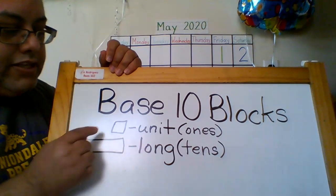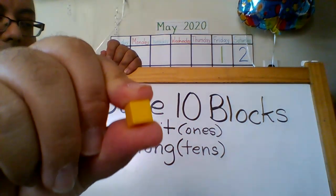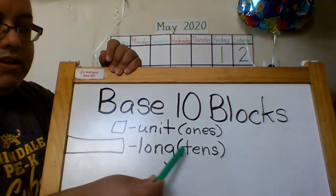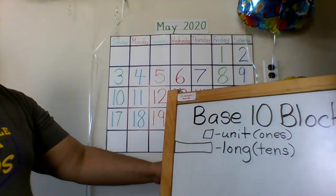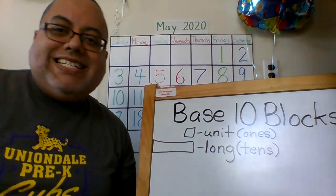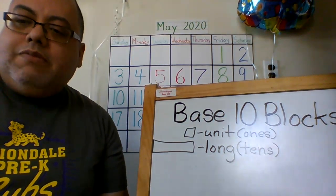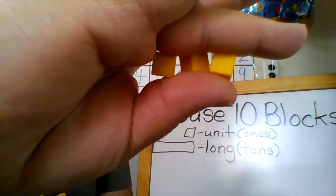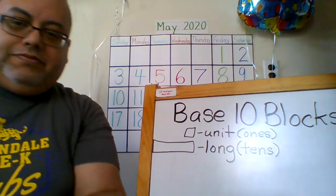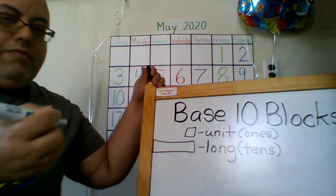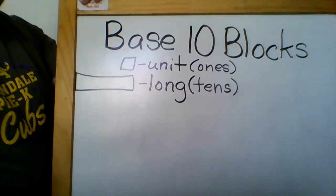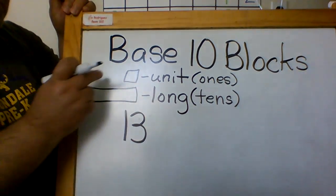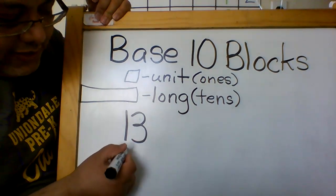In the base ten blocks we have the cube, which represents the ones, and we have the longs, which represent the tens. So when I say 13, it means three of these cubes and one of these longs. I'm going to draw it now. I'm going to say 13 — I put a one and a three — but when I use base ten blocks, you're going to see this on your worksheet.